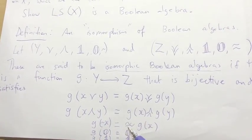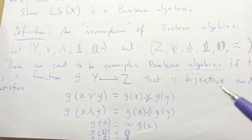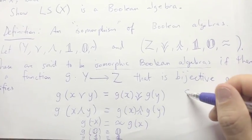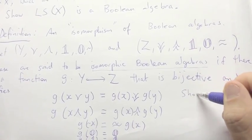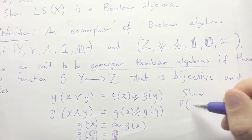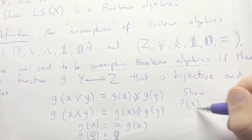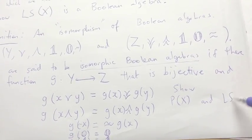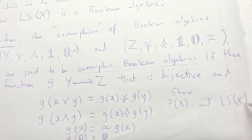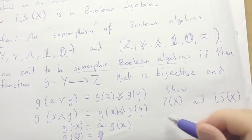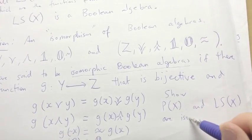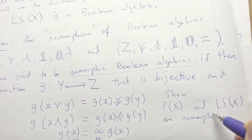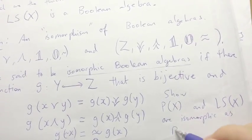And so the exercise we want to do after this is: show that P(X) and LS(X) are isomorphic as Boolean algebras.